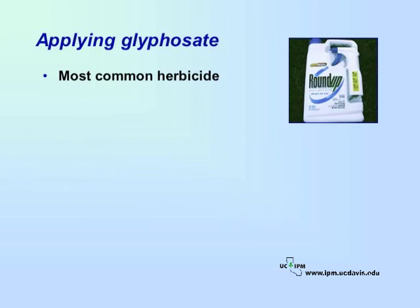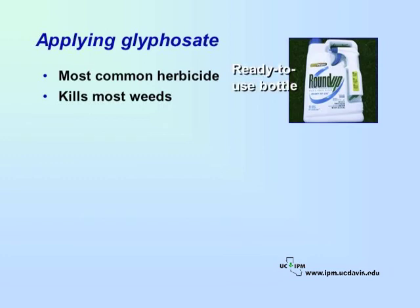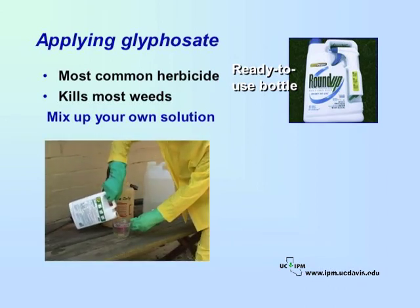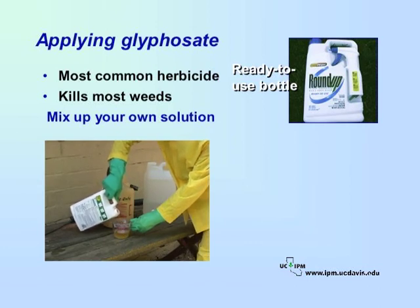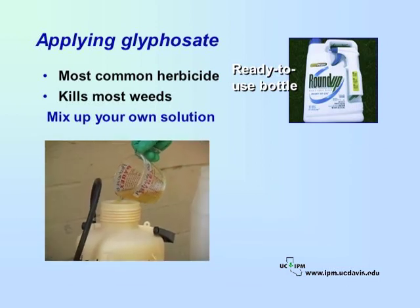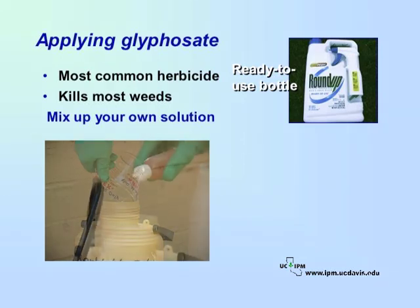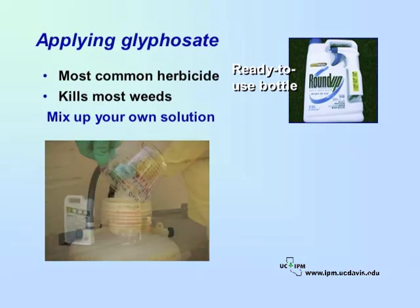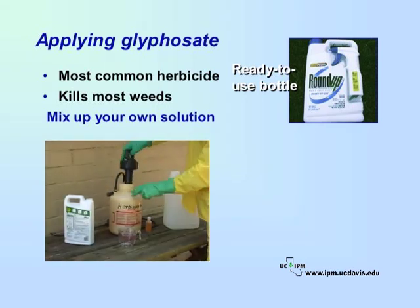Glyphosate is probably the most common herbicide used around schools. It can kill most weeds, but if not used correctly, it can also damage nearby desirable plants. Ready-to-use bottles of glyphosate are widely available, but the formulations in these pre-mixed solutions may be too weak to control perennial weeds. To control perennial weeds, mix up your own solution of glyphosate. Use a handheld controlled droplet applicator or a low-pressure small pump sprayer with a flat or cone nozzle. Follow the rate listed on the label of the product using a formulation labeled for your specific use. Measure the correct amount of product. If the product label calls for it, add a few drops of a surfactant or wetting agent to allow for better spray coverage on the surface of the weeds — some products already include a surfactant. After you add the product, rinse the measuring container and pour the rinse solution into the sprayer followed by the correct amount of water.